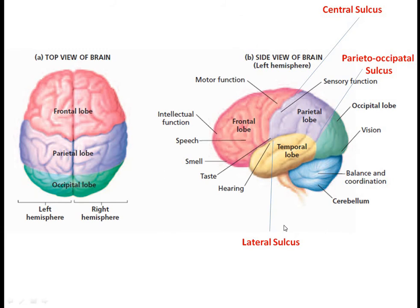Looking at the functional aspects of the different lobes: the frontal lobe is responsible for generating motor impulses, speech production, and to some extent male perception, as well as higher intellectual functions like memory storage, logical analysis, etc. The temporal lobe is mainly responsible for hearing. The occipital lobe is responsible for vision and visual perception. The parietal lobe is responsible for different sensory functions — all sensory inputs are received by the parietal lobe.